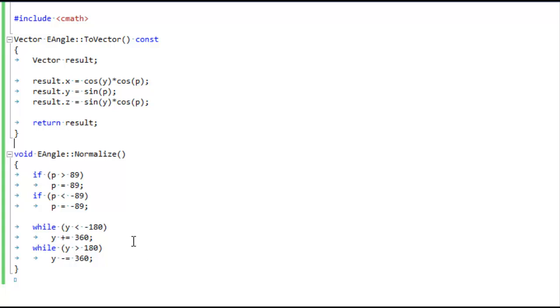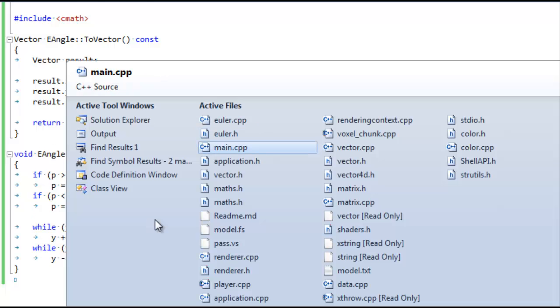Now this normalized function down here, all this is, is just it keeps the pitch values between negative 90 and positive 90 and it keeps the yaw values going from negative 180 to positive 180 so that it's sane. So that turning the mouse like four times in a row doesn't cause it to freak out.